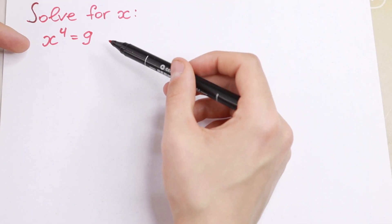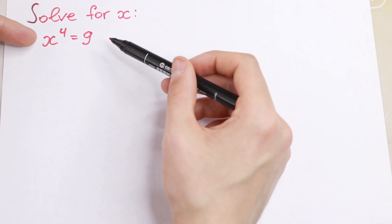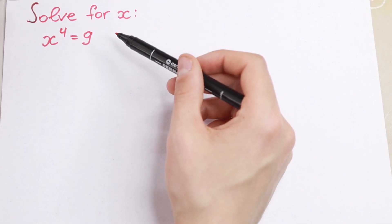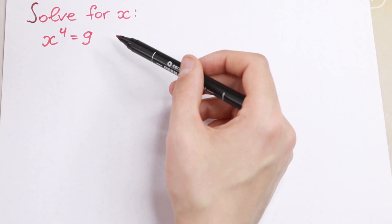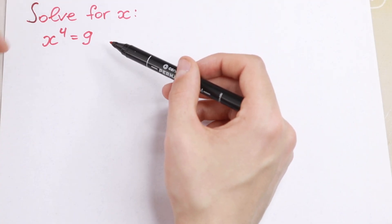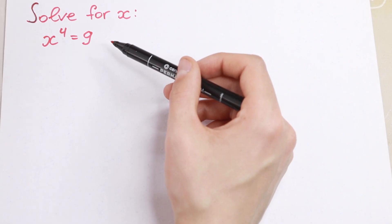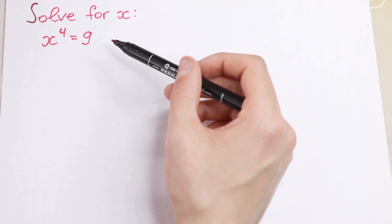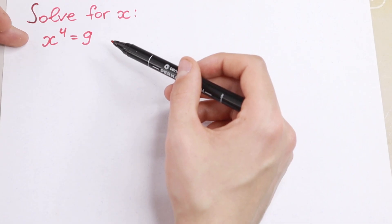If we take, for example, the fourth root from both sides, we will have our roots. But we can make a mistake right here, because as you know, we have degree four, and we will have no more than four roots. So as you can see, right here we will have four roots.